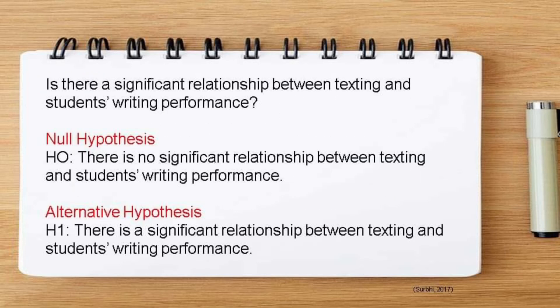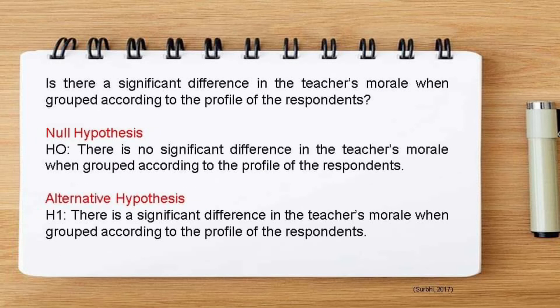Let us take a research question and state both the null and alternative hypotheses. Research question: Is there a significant relationship between texting and students' writing performance? The null hypothesis: there is no significant relationship between texting and students' writing performance. The alternative hypothesis: there is a significant relationship between texting and students' writing performance. For another research question — is there a significant difference in the teacher's morale when grouped according to the profile of the respondents? — the null hypothesis is: there is no significant difference in the teacher's morale when grouped according to the profile of the respondents. The alternative hypothesis is: there is a significant difference in the teacher's morale when grouped according to the profile of the respondents.